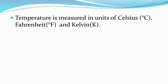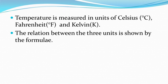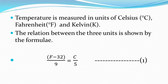Temperature is measured in three units: degree Celsius, degree Fahrenheit, and Kelvin. Kelvin is used in scientific experiments, while the other two are used in daily life. The relationship between these units is given by the formula: (F − 32) / 9 = C / 5.